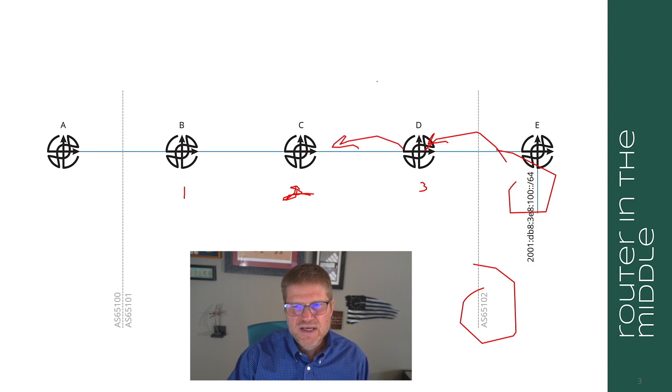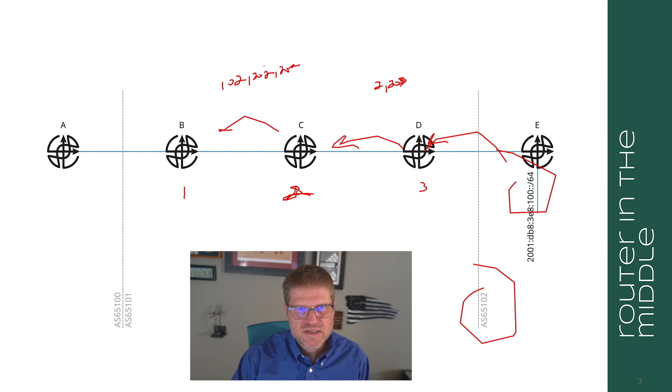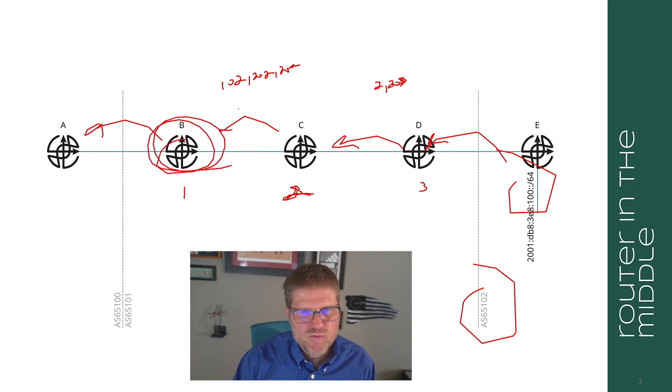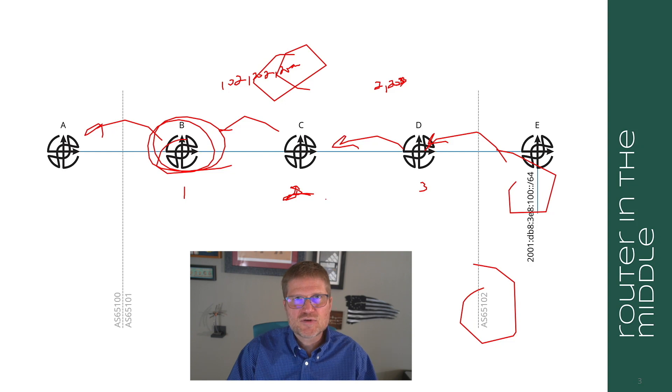You're going to see the AS path has 203, and then when I advertise it from C to B I'm going to see 102, 202, 203. The BGP speaker at B recognizes that these 200 number AS 65201, 202, 203 are internal to the AS, internal to the confederation.